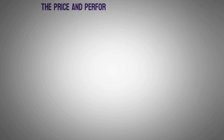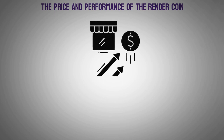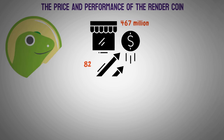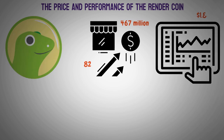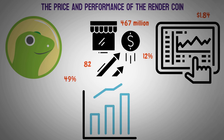The price and performance of the Render coin: with a market cap of currently 467 million, Render is the number 82 biggest crypto according to CoinGecko at the time of writing. It is currently trading around $1.84 and is 12% up for the day. It has performed well lately, up over 49% last month. Looking at the previous all-time high of $8, it is 75% down ever since.